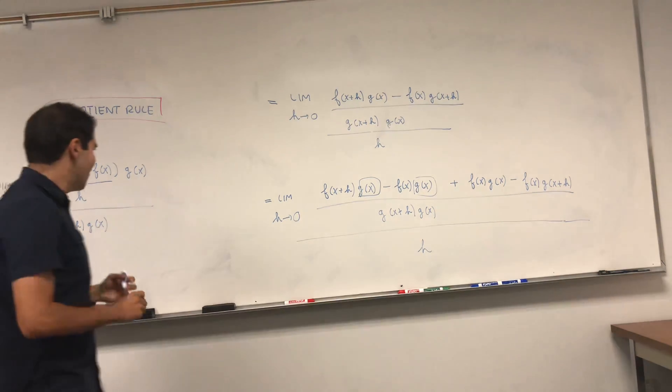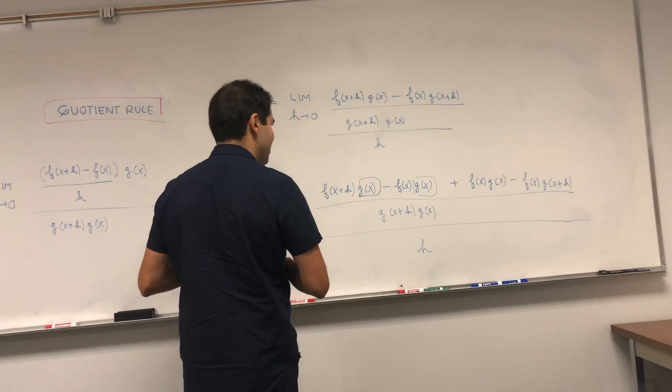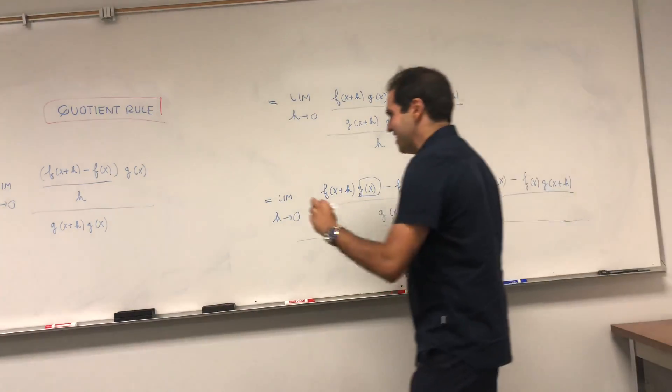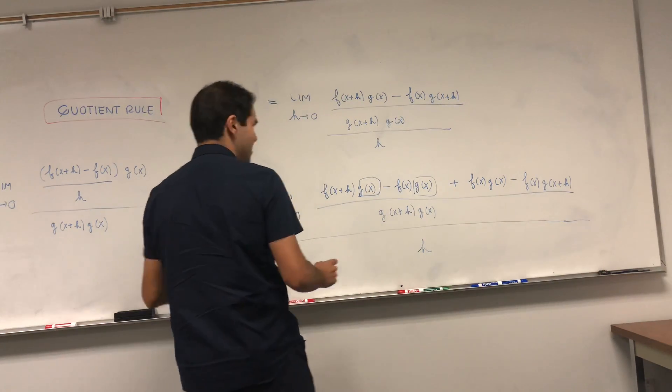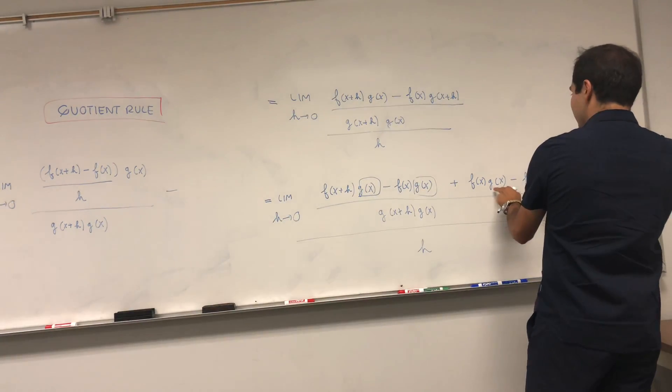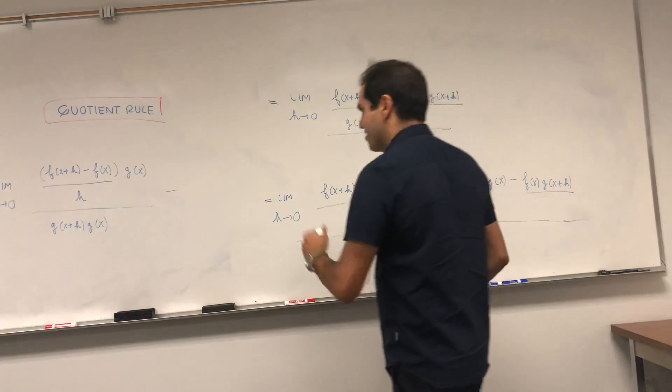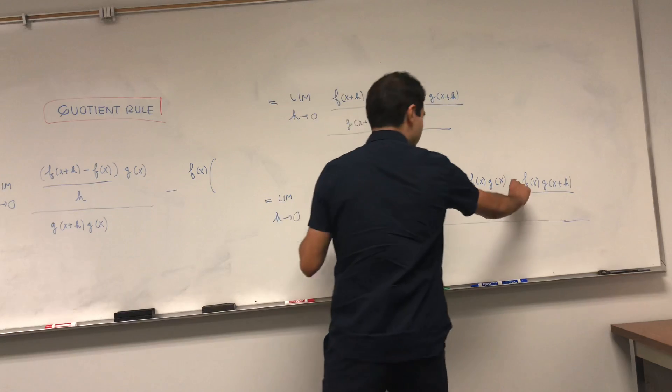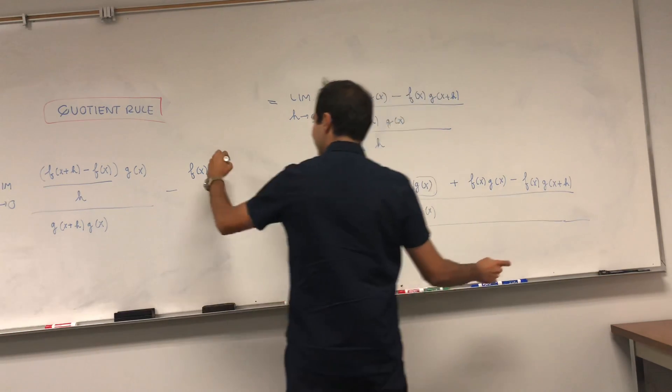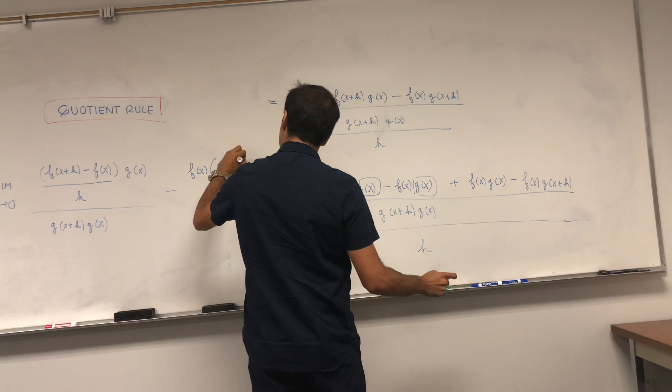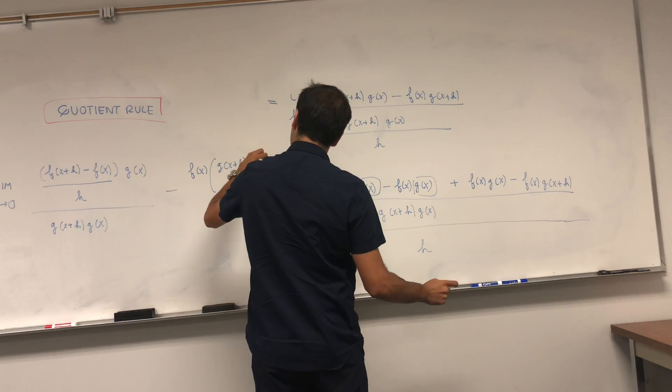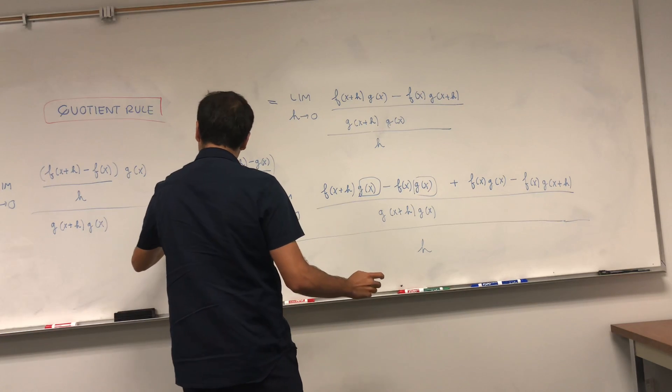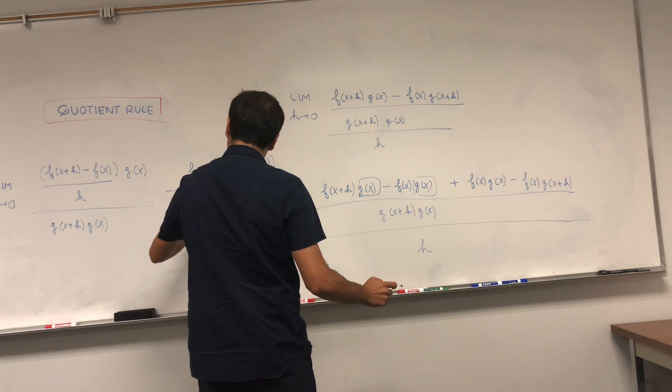And I know you're very tempted to cancel out the g of x's, but don't do that yet, because we want to write this in quotient rule notation. And then, remember the quotient rule involves a minus. So minus. Now, similar terms here. So in this case, the f of x factors out. And you're left with, again, because you have the minus sign, g of x plus h minus g of x over h, and all this divided by g of x plus h times g of x.